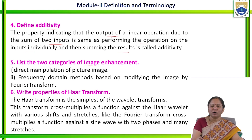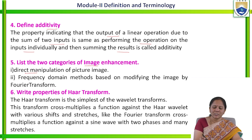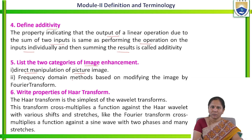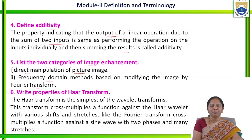List the two categories of image enhancement. One is spatial domain, which is called direct manipulation of the picture image. The second category is frequency domain, which is used for modifying the image by making use of Fourier transform.